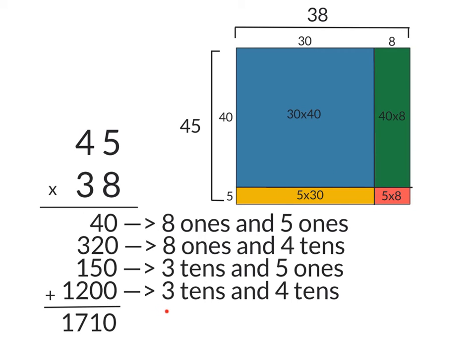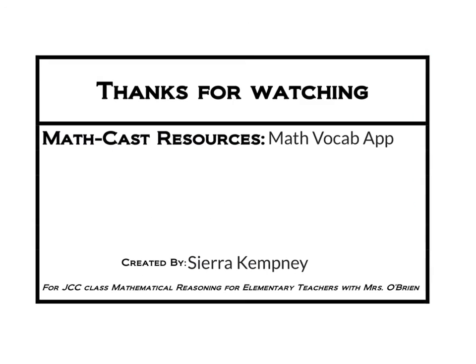The 3 10's and 5 1's are represented by the yellow square. And finally, the 3 10's and 4 10's are represented by this blue square. And once again, like it was in the last problem, all 4 parts that add up to get this 1,710 make up this 1 square. And that concludes our lesson.